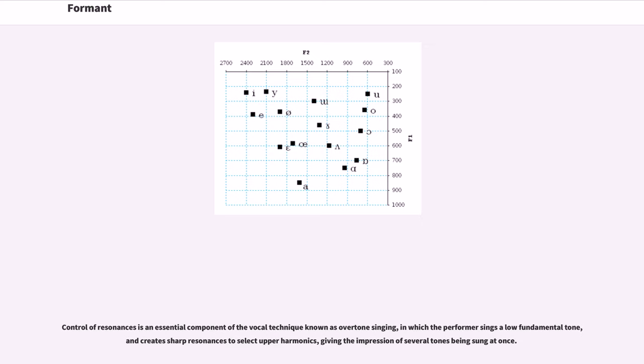Control of resonances is an essential component of the vocal technique known as overtone singing, in which the performer sings a low fundamental tone, and creates sharp resonances to select upper harmonics, giving the impression of several tones being sung at once.